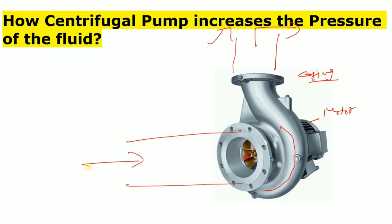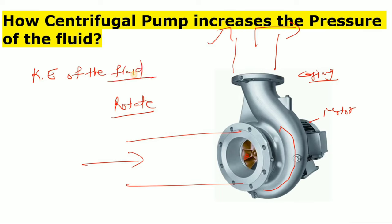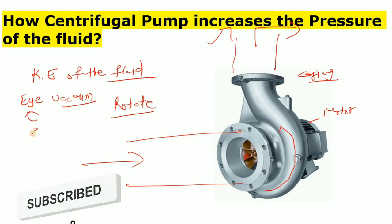The fluid will come in from here — there will be a strainer and a valve, though I am not drawing those here. When we start the centrifugal pump, the impeller will rotate. As the fluid goes through the eye of the impeller and the impeller rotates, it will increase the kinetic energy of the fluid. At the eye of the impeller, it will create a vacuum.